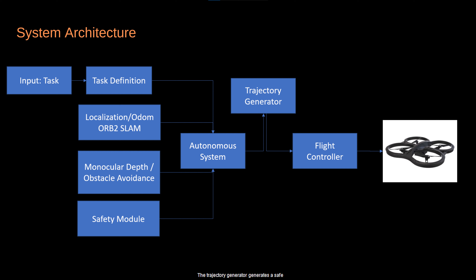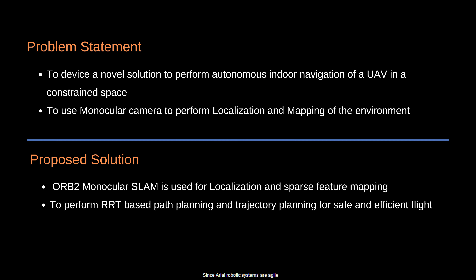The trajectory generator generates a safe and efficient trajectory and sends it to the flight controller. The flight controller converts the trajectory to motion commands. Since aerial robotic systems are agile in nature, we need powerful algorithms to fly autonomously. Our working case is an indoor environment, so GPS cannot be used due to its high uncertainty and poor measurement accuracy indoors.